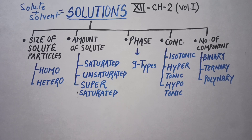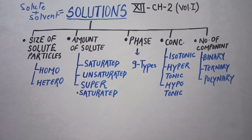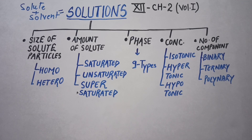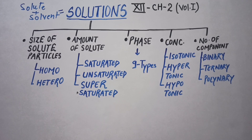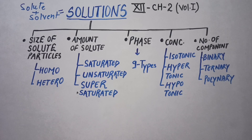Hypertonic means the solution with a higher solute concentration. Hypotonic is just the opposite of hypertonic — the solution with a lower solute concentration is known as hypotonic solution.